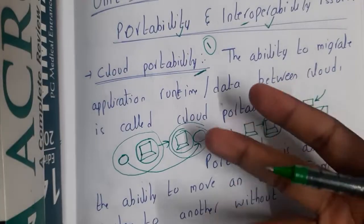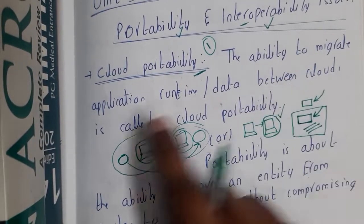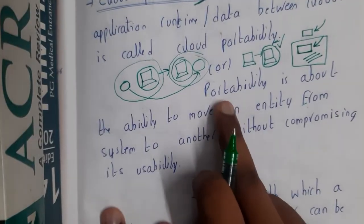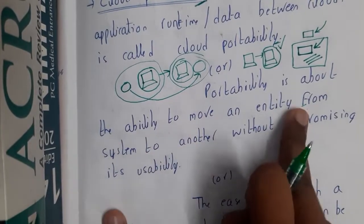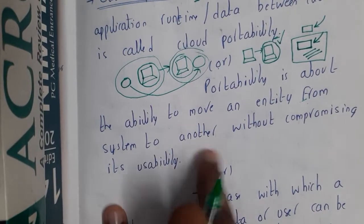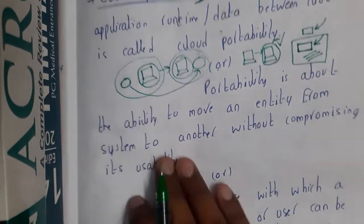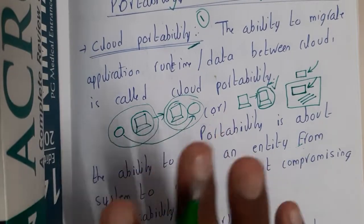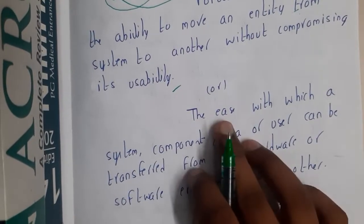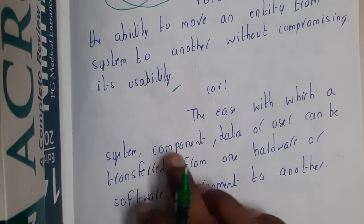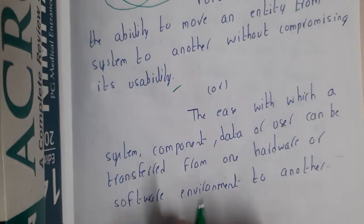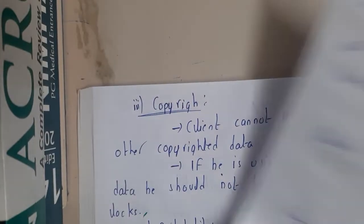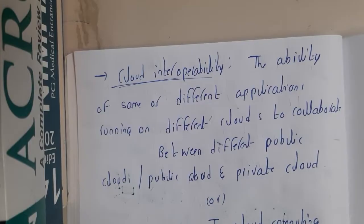I wrote three definitions — you can select any one. First: the ability to migrate application, runtime, or data between clouds is called portability. Second: portability is about the ability to move an entity from one system to another without compromising its utilities — your website should run 100% smoothly. Third: the ease with which a system component, data, or users can be transferred from one hardware or software environment to another.